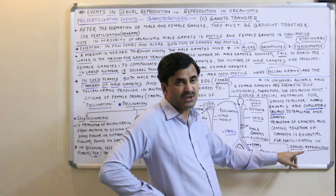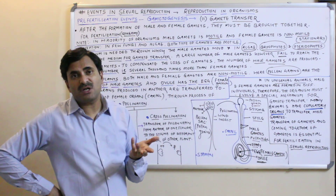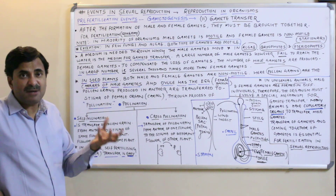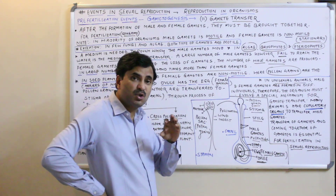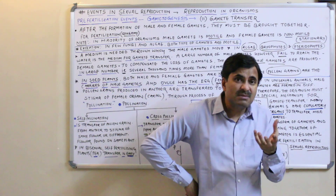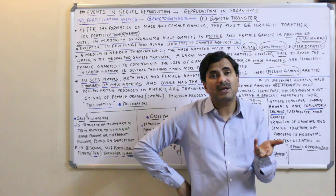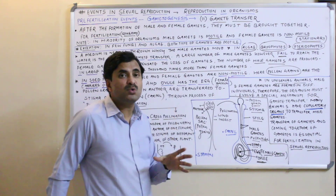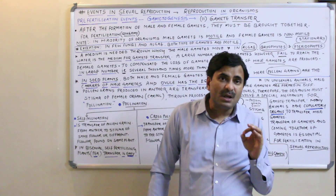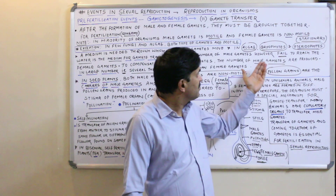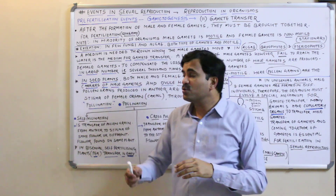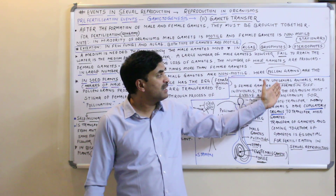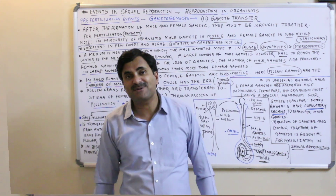Transfer of gametes is essential for fertilization in sexual reproduction. When the two compatible gametes come close to each other, fertilization occurs. Today's video covered how gamete transfer occurs in algae, bryophytes, and pteridophytes; in seed plants; and in unisexual animals. Thanks for watching.